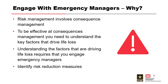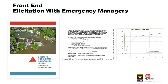For effective consequence management, you need to understand the key factors that drive life loss — we've talked a lot about those this week. Understanding those factors really requires that you engage with emergency managers. There are factors like a good hydraulic model and understanding flood characteristics and severity, and then there are factors involving the warning and evacuation process, how people are likely to behave, and eliciting those protective actions. And then from there we can identify risk reduction measures. Jason talked about this — one of the best things from the research by Mileti and Sorensen was this guide to public alerts and warnings for dam and levee emergencies.